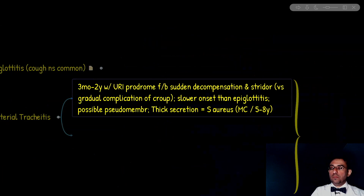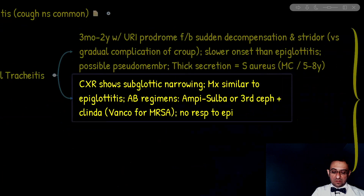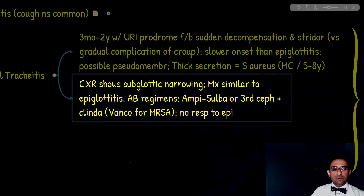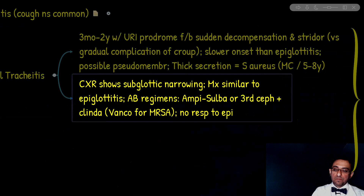The hallmark of chest x-ray assessment is subglottic stenosis. Management is similar to that of epiglottitis, with the same indications for intubation if the patient is deteriorating. Antibiotic regimens are also similar, including third-generation cephalosporins, and if indicated, vancomycin for MRSA, with clindamycin as an alternative. If asked about the response to racemic epinephrine — as opposed to the positive response in croup — here we do not have a response to racemic epinephrine.